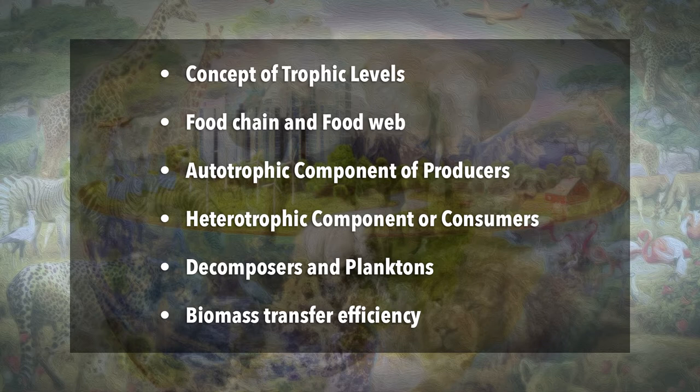The main objectives of this lecture are: 1. Concept of Trophic Levels, 2. Food Chain and Food Web, 3. Autotrophic Component or Producers, 4. Heterotrophic Component or Consumers, 5. Decomposers and Planktons, 6. Biomass Transfer Efficiency.